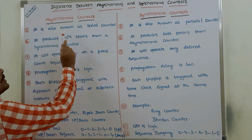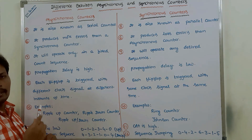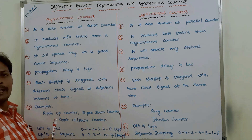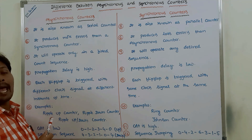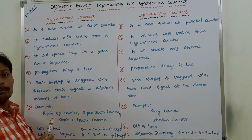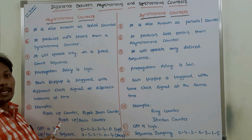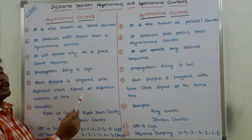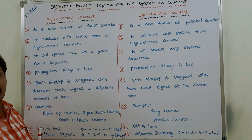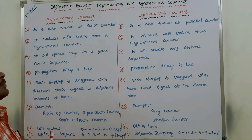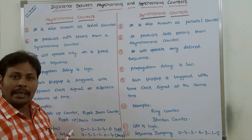Fifth point: asynchronous counters are also known as serial counters, because the clock pulse propagates serially — the output of one flip-flop feeds as clock to the next. Synchronous counters are also known as parallel counters.